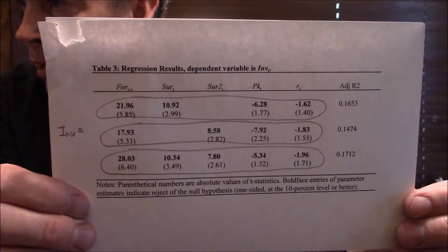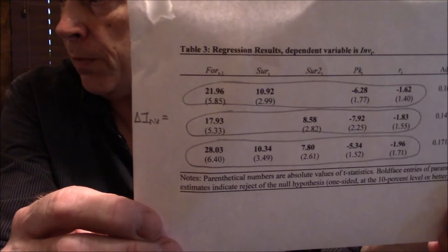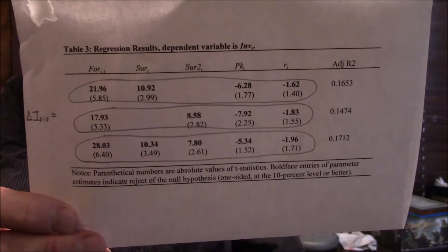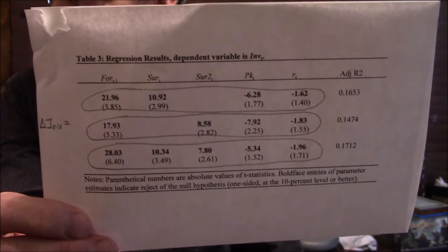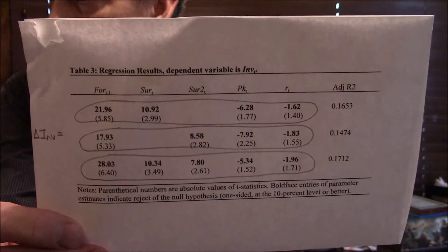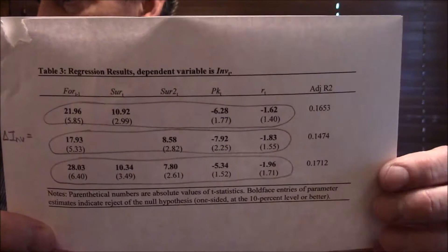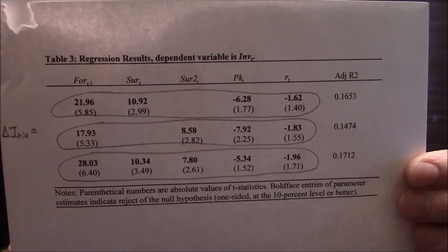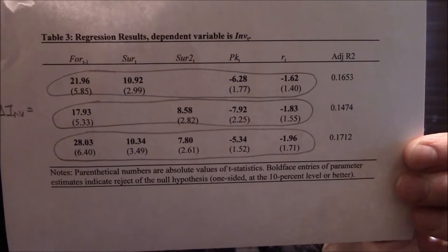Now that's three different equations. On each of the three of them, it's trying to explain investment. And strictly speaking, it's the change in investment from one quarter to the next, which is much more difficult to explain than just investment, which is why the adjusted R squares are not like 0.9 and instead like 0.17 and so forth. The t-scores are in parentheses underneath. That's three different equations. The first equation includes F-O-R, S-U-R, P-K, and R. The second equation includes F-O-R, S-U-R-2, P-K, and R. And the third one includes all of them.